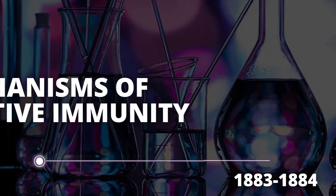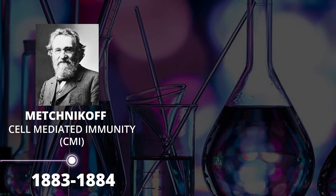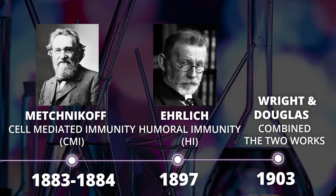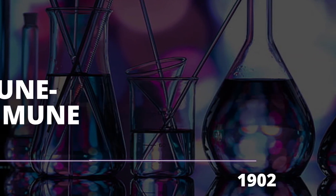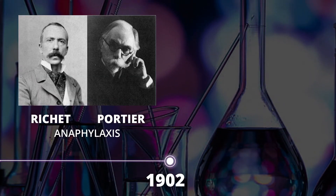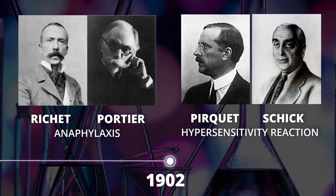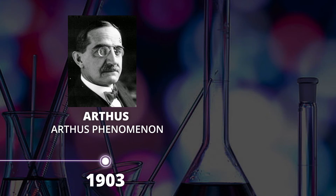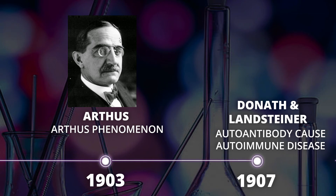In 1883 to 1884, Elie Metchnikoff discovered cell-mediated immunity, where microorganisms were engulfed and destroyed by phagocytic cells. In 1897, Paul Ehrlich discovered humoral immunity, whereby antibody and serum played important roles in protective immunity. In 1903, Wright and Douglas combined both ideas — demonstrating that antibody and serum could promote phagocytosis by phagocytic cells. In 1902, Richet and Portier discovered anaphylaxis, a severe potentially life-threatening allergic reaction. Pirquet and Schick explained hypersensitivity reactions. Nicholas Maurice Arthus discovered the Arthus phenomenon, and in 1907, Donath and Landsteiner discovered that autoantibodies could cause autoimmune disease.